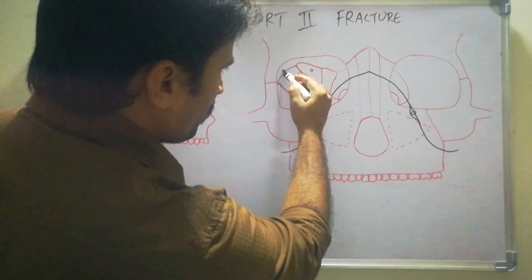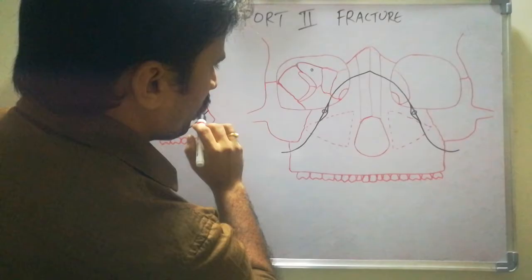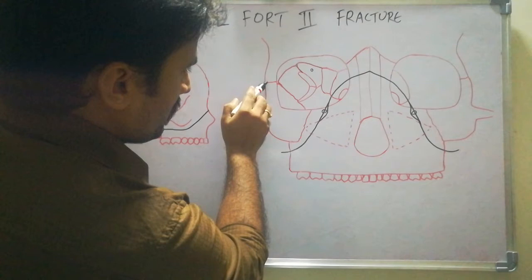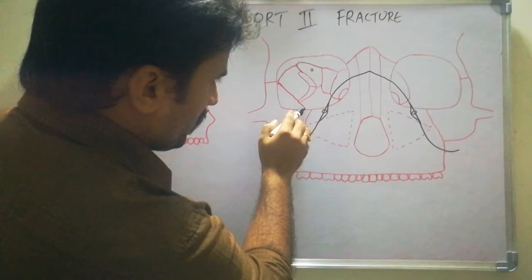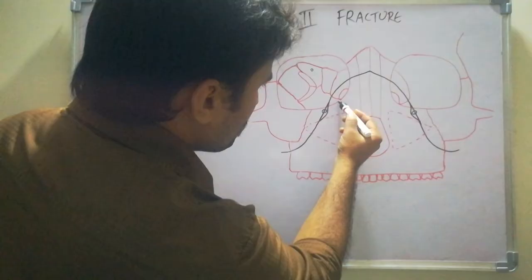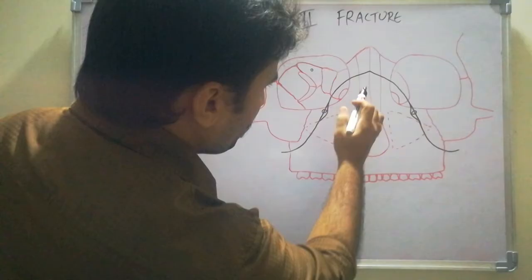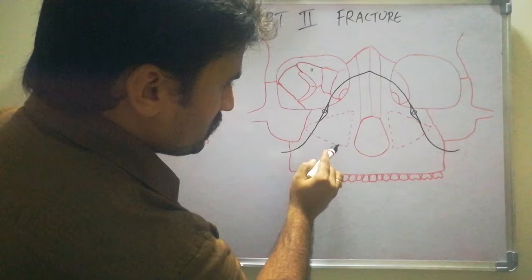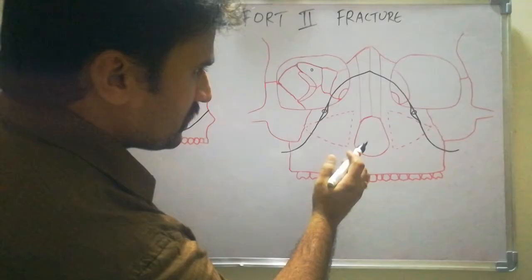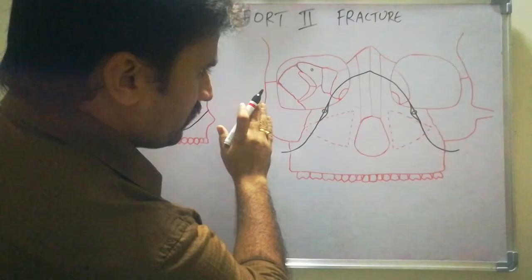This is the orbital process of the zygomatic bone. This is the zygomatic arch and this is the frontozygomatic suture. This is the lateral orbital wall. In between the zygomatic bone and the sphenoid bone is the sphenozygomatic suture. This lower wing is the maxillary bone — that is the orbital plate of the maxillary bone. With the frontal process of the maxilla, this complete structure is formed by the maxillary bone. In the maxillary bone, we have the maxillary sinus. The maxillary sinus is roughly a pyramidal structure with the base towards the lateral wall of the nose and with the apex towards the zygomatic bone.